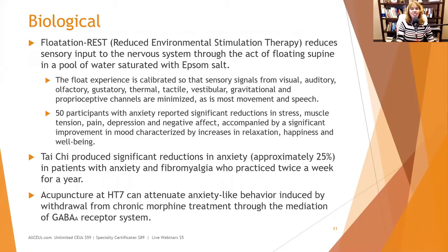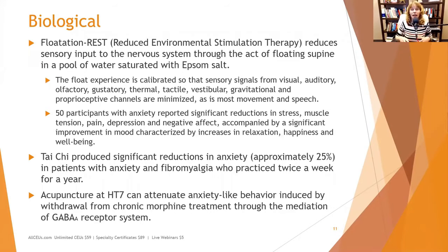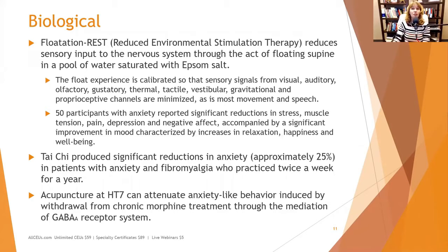Acupuncture at the HT7 meridian can attenuate anxiety-like behavior induced by withdrawal from chronic morphine treatment through mediation of the GABA-A receptor system. Done in specific places, acupuncture triggers the GABA-A receptor system — GABA being your main calming relaxation neurochemical — causing the body to flood that receptor system. This research was done on people detoxing from morphine, but the results may generalize, and further studies would be interesting.